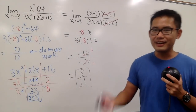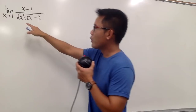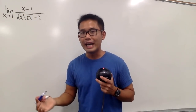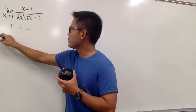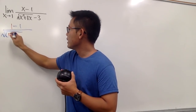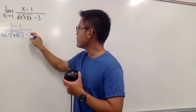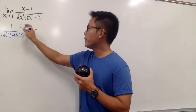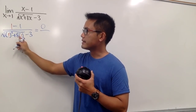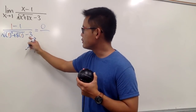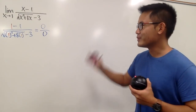Let's look at another technique. For this next limit, we plug in 1 into all the x's. On the top, 1 minus 1 is 0. On the bottom, 1 squared plus 8 times 1 is 9, square root of 9 is 3, and 3 minus 3 is 0. So we get 0 over 0 — we have to do more work.